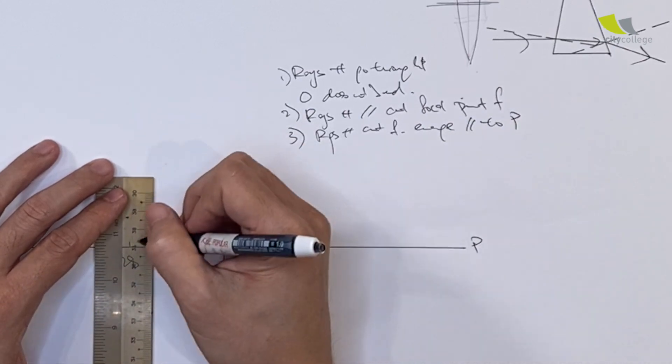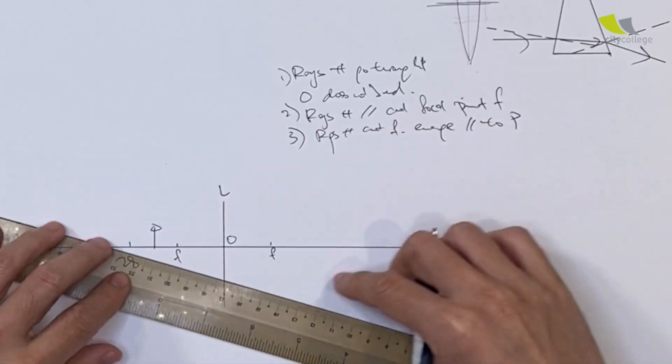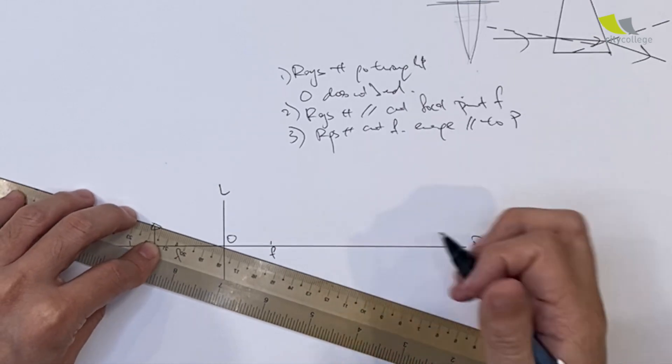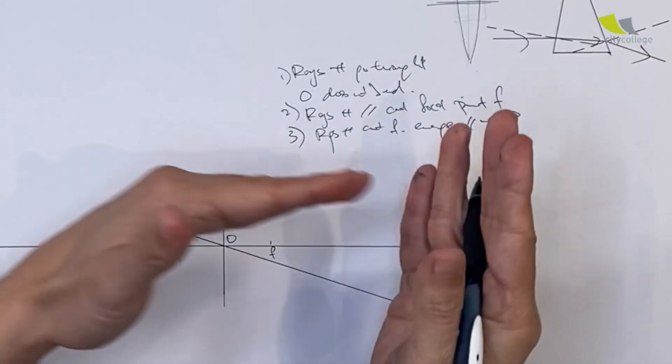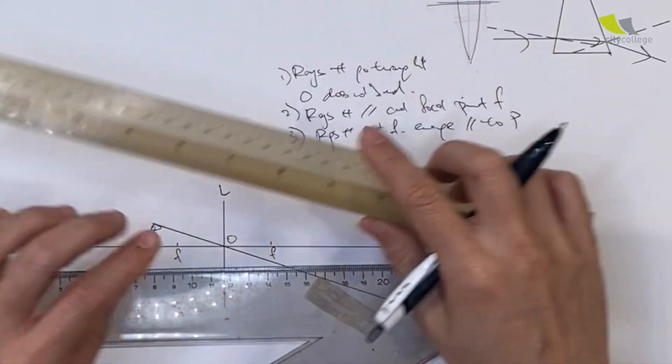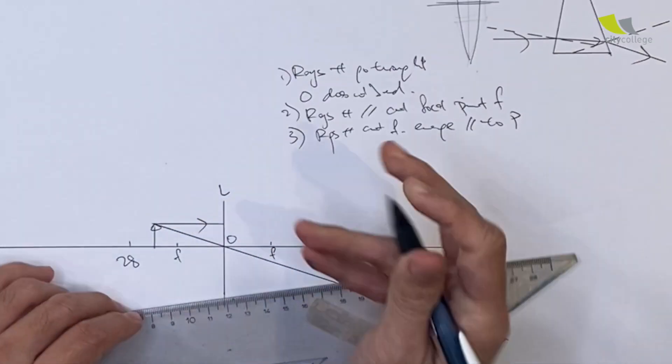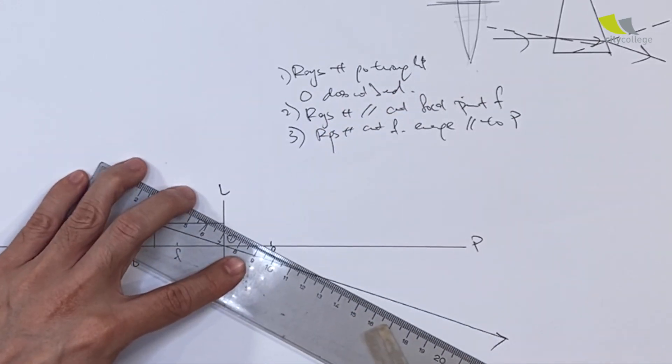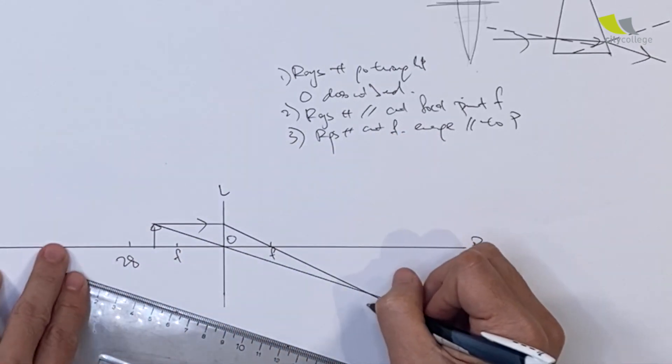Let me show you. If I have an object here between one focal length and two focal lengths away, the first line I draw is line number one: the tip goes through the optical center and doesn't bend - that's ray one. Technically, for every image we only need two rays. The second ray I draw will be the ray that's parallel to the principal axis. This line will cut through the focal point.